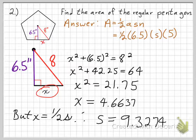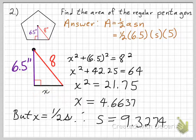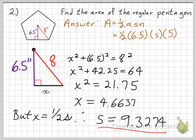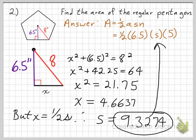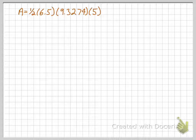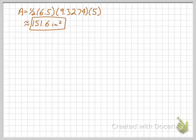So the whole entire side length runs from here to here — that's my S. I have to multiply the value I got from the Pythagorean theorem by 2 to get the actual side length, which gives S equals 9.3274. Once I have that, I plug it into the formula: area equals one-half times 6.5 times 9.3274 times 5, and multiplying that all out gives 151.6 square inches.